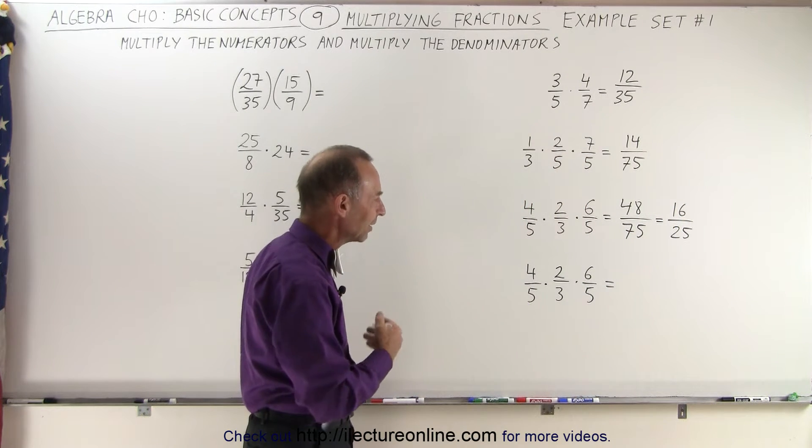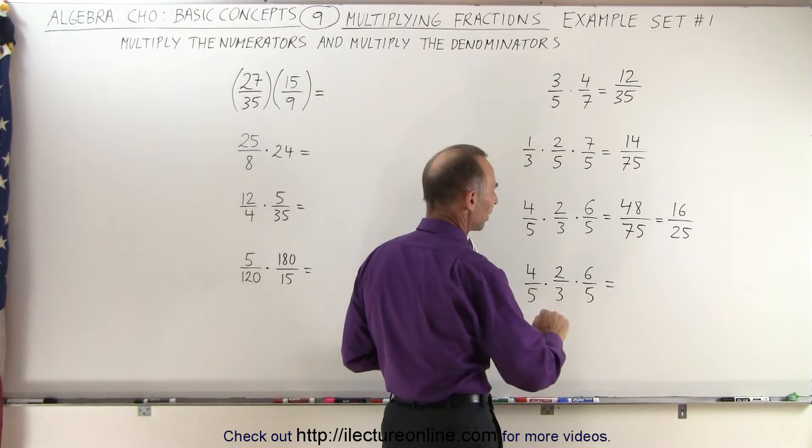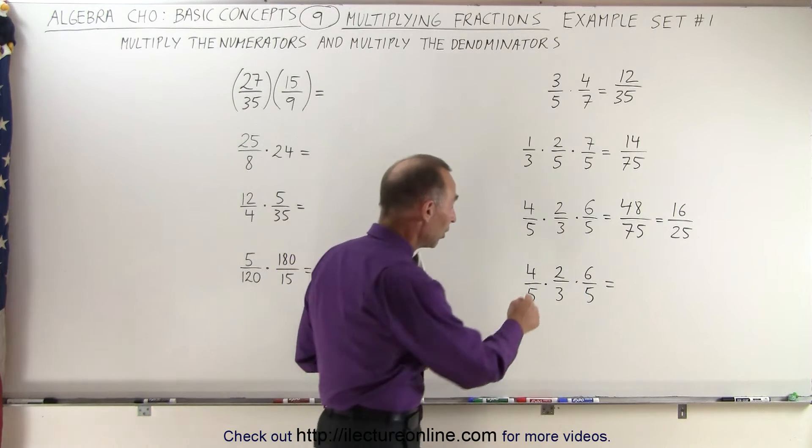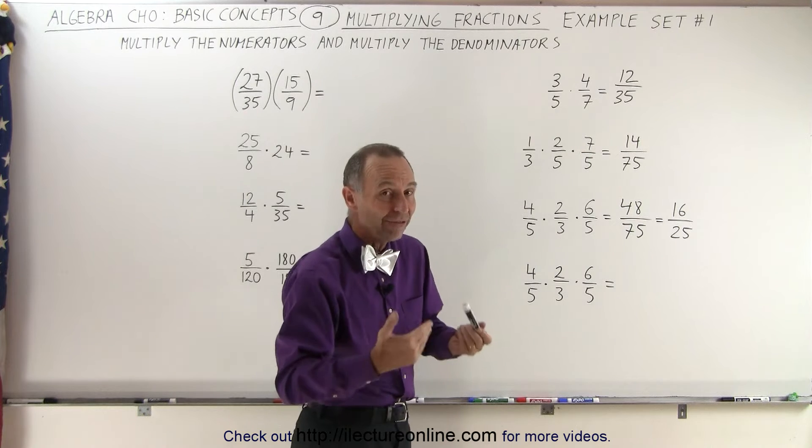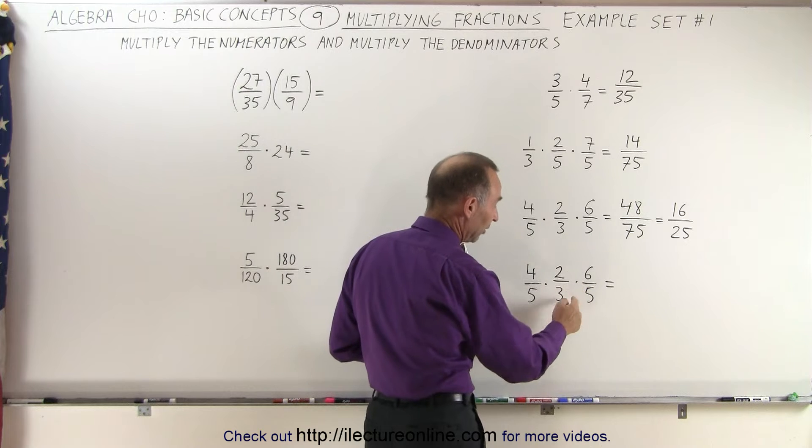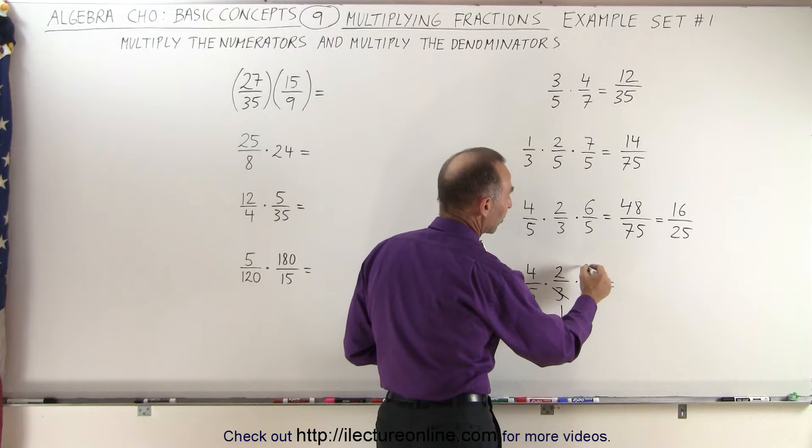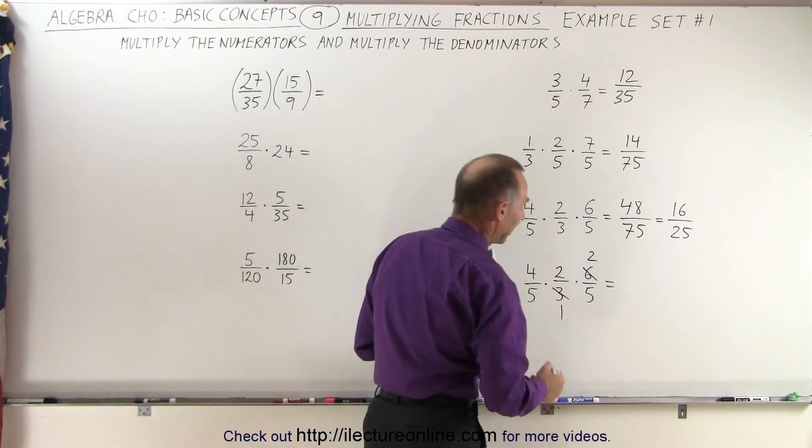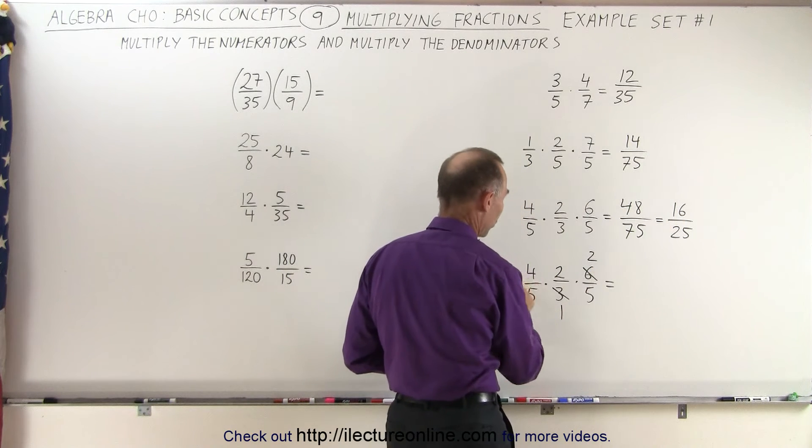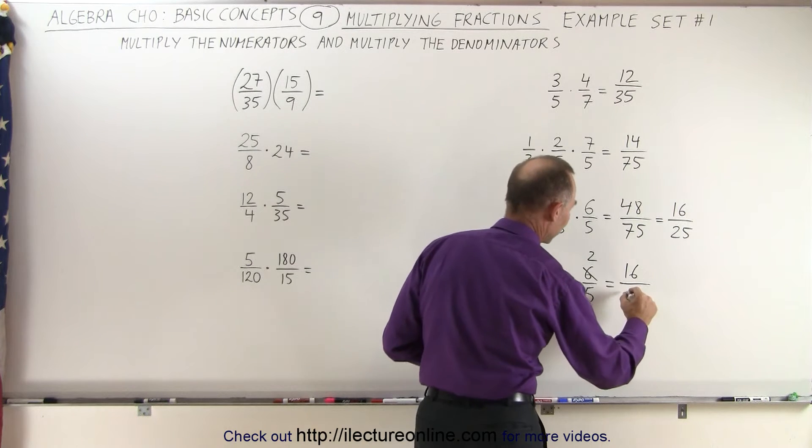But we can do that one in a different way. Before we multiply all the numerators and denominators together, we could reduce any numerator with any denominator because we are multiplying these together. These are indeed factors, so we can reduce the 6 and the 3. We divide this 3 by 3, that gives us 1. We divide this 6 by 3, which gives us 2. Now when we multiply these together we get the same answer: 4 times 2 times 2 which is 16, divided by 5 times 1 times 5 which is 25.